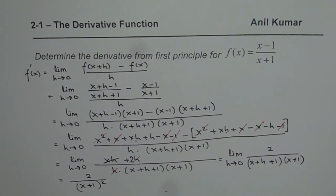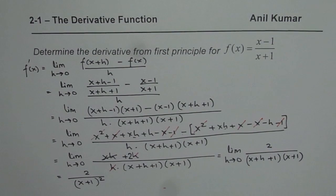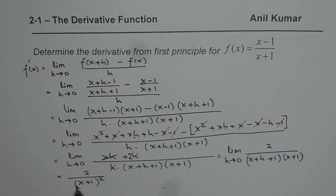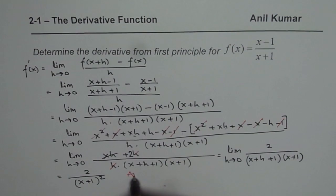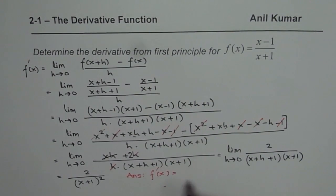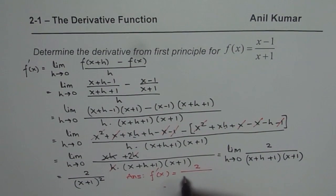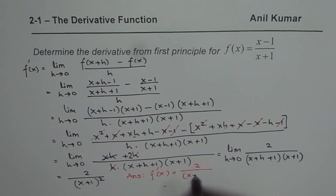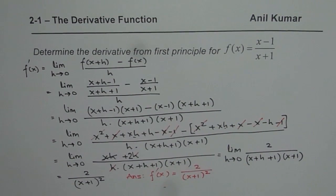So what we get is 2 over x plus 1 whole square. That is the derivative of the given function. We can now write that f dash x equals 2 over x plus 1 whole square.